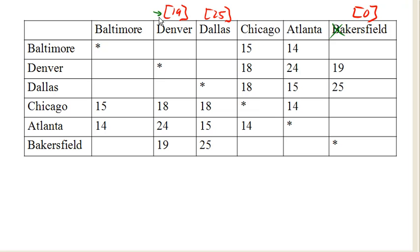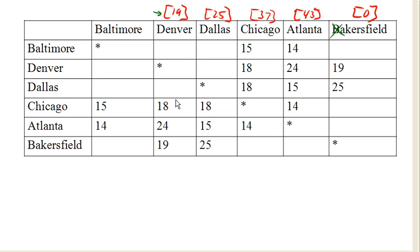From Denver, we work backwards again. We could go 18 hours additional to Chicago — so 19 hours plus another 18 hours would be 37 hours to Chicago. Or from Denver, we could go to Atlanta — 19 plus 24 hours would be 43 hours to Atlanta. We don't want to go back to Bakersfield, so we're now done with Denver and move on to the next closest city.